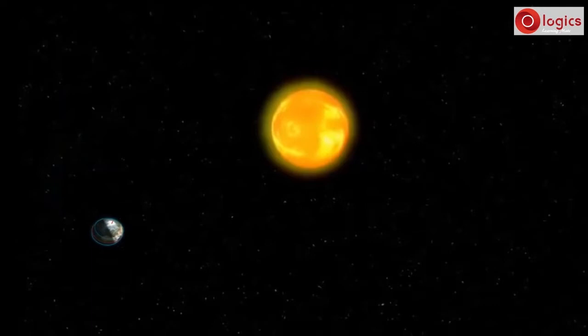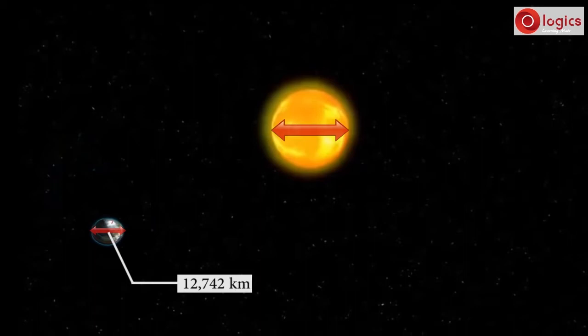If the diameter of earth is 1 kilometer, then diameter of sun is 109 kilometers. The actual diameter of earth is 12,742 kilometers.